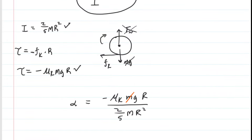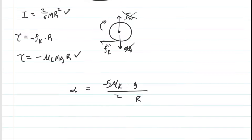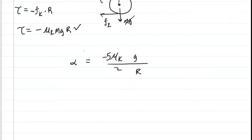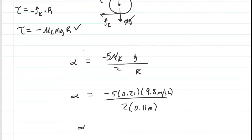Plugging the torque and moment of inertia expressions into the angular acceleration equation, we can simplify: the mass of the ball cancels out, as does one factor of radius. Multiplying top and bottom by 5 leaves a 2 in the denominator and 5 in the numerator. Plugging in the known values, we get an angular acceleration of approximately negative 46.8 radians per second squared. That is the answer to part C.